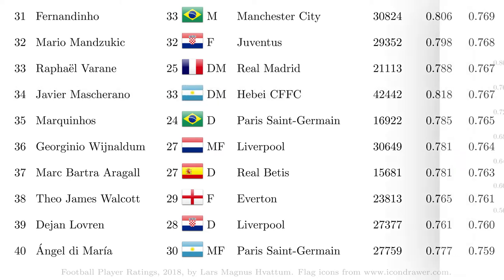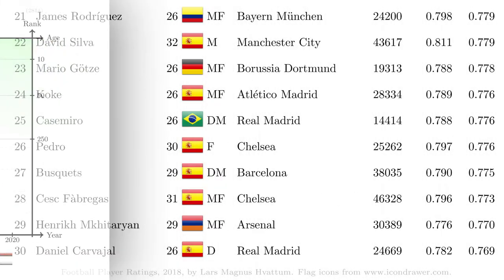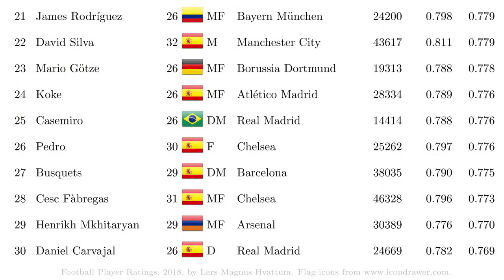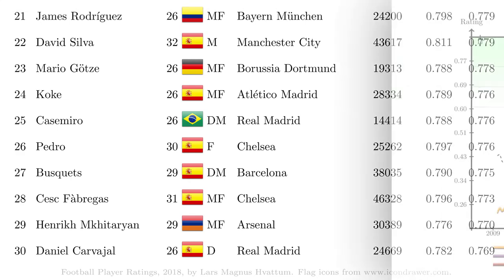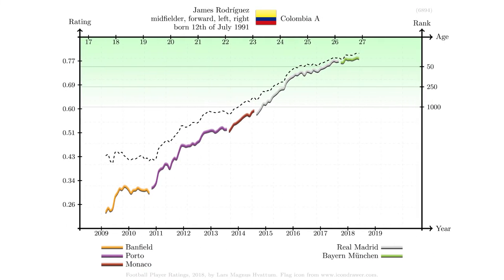Mascherano's high rating is probably to a high degree based on his performance as a Barcelona player. James Rodriguez, at number 21, is not only the highest rated player from Colombia, but also the only one appearing in this top 100 list.